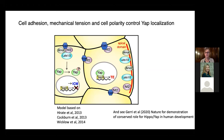Interestingly, Kathy Niakan's lab has shown that in human embryos — where we know things are somewhat the same and somewhat different — HIPPO-YAP also seems to be conserved and involved in specifying trophectoderm fate. So this is a conserved and important pathway.